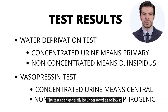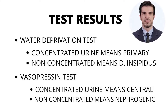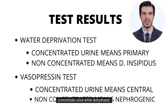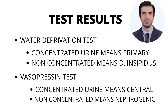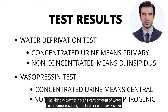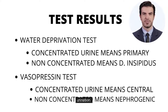Modified water deprivation test: primary polydipsy, or psychogenic thirst, can be diagnosed if a dog can concentrate urine while dehydrated. This is a psychological issue. Dogs with this condition are compelled to drink water excessively, even when they are not thirsty. The kidneys excrete a significant amount of water in the urine, resulting in dilute urine and excessive urination. This is a relatively uncommon condition.